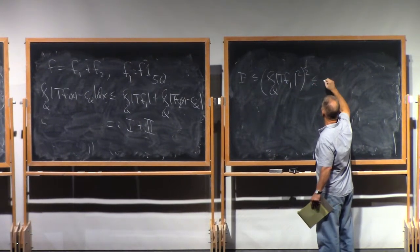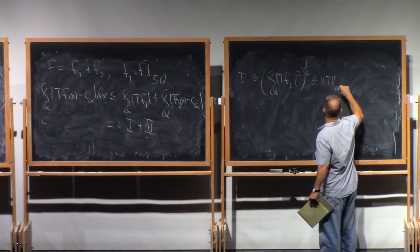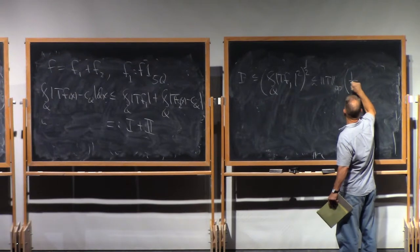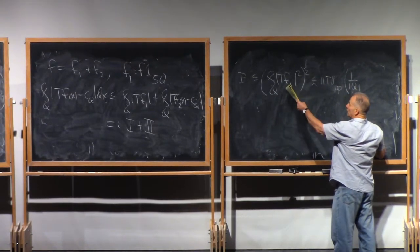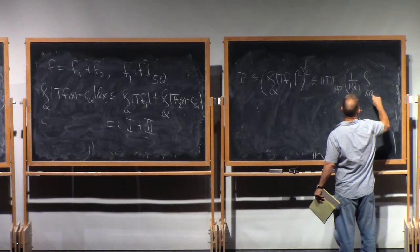This will be less than or equal to the L2 operator norm of T. We'll have 1 over the measure of Q. Then we'll pick up the L2 norm of F1, but F1, remember, is truncated to live in 5Q.